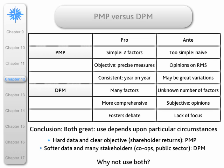Let me compare the two techniques. The product market portfolio is really great — so simple, two factors. We get objective and precise measures and can plot it consistently year on year. Against it: it's naive, too simple, and there are different opinions on relative market share. For the directional policy matrix, in its favour it accommodates many more factors, it's much more comprehensive, and it's a great device for fostering debate. Against it: it's much more subjective. My conclusion is they're both great, but their use depends on circumstances. If you have hard data and a clear objective such as shareholder returns, use the product market portfolio. If you have softer data, less precision, and many stakeholders — such as co-ops or the public sector — probably use the directional policy matrix. Why not have both? That's what I would do.